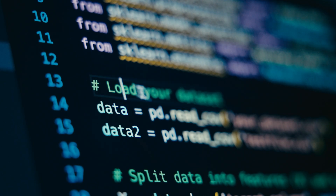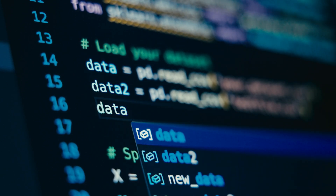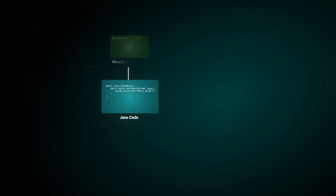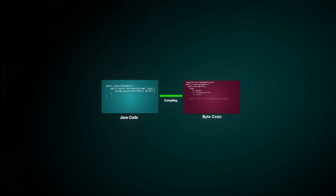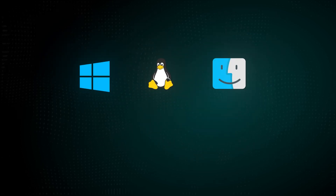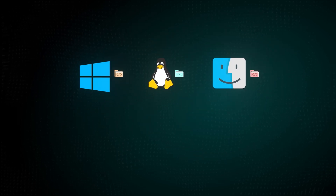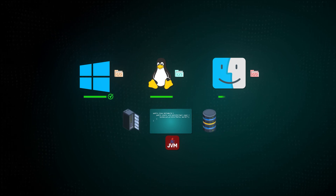One of Java's biggest strengths is its write-once-run-anywhere capability. This is possible because Java code isn't directly compiled into machine code — it's compiled into bytecode, which is then executed by the JVM, or the Java Virtual Machine. Since different operating systems have their own versions of the JDK, the JVM ensures that the same Java code can run on any system with a compatible JVM, regardless of the underlying OS.